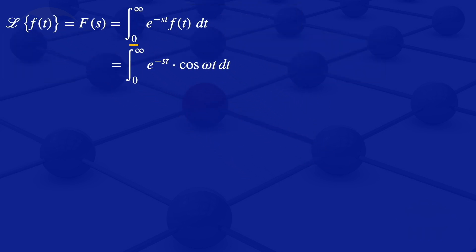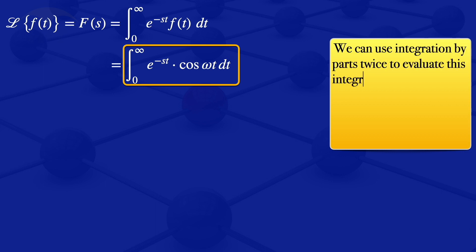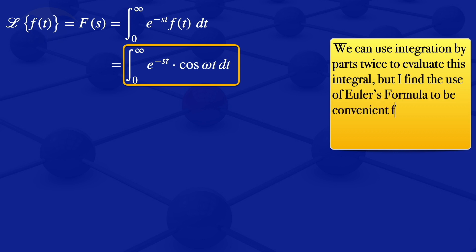Looking at that integral, we see it is a product of two functions of t: e to the minus s t and cosine of omega t. To evaluate such integrals we can use integration by parts twice, or since we have a cosine we can make use of Euler's formula. Either way you get the same result, but in this tutorial we make use of Euler's formula.